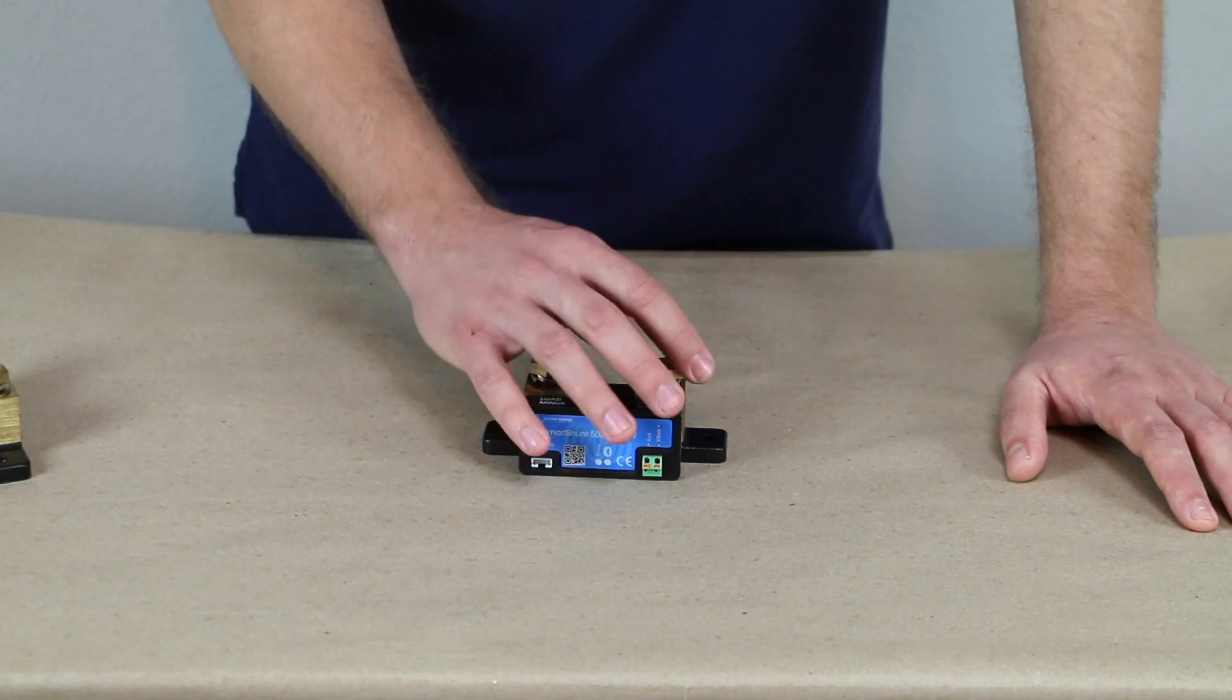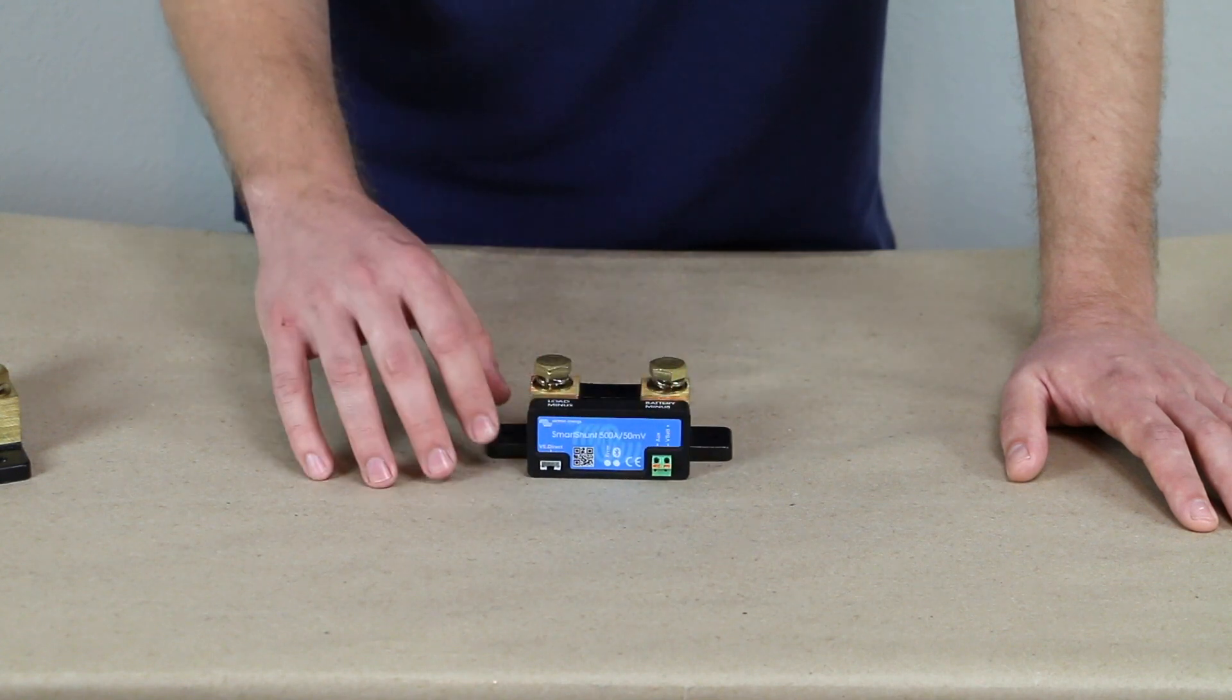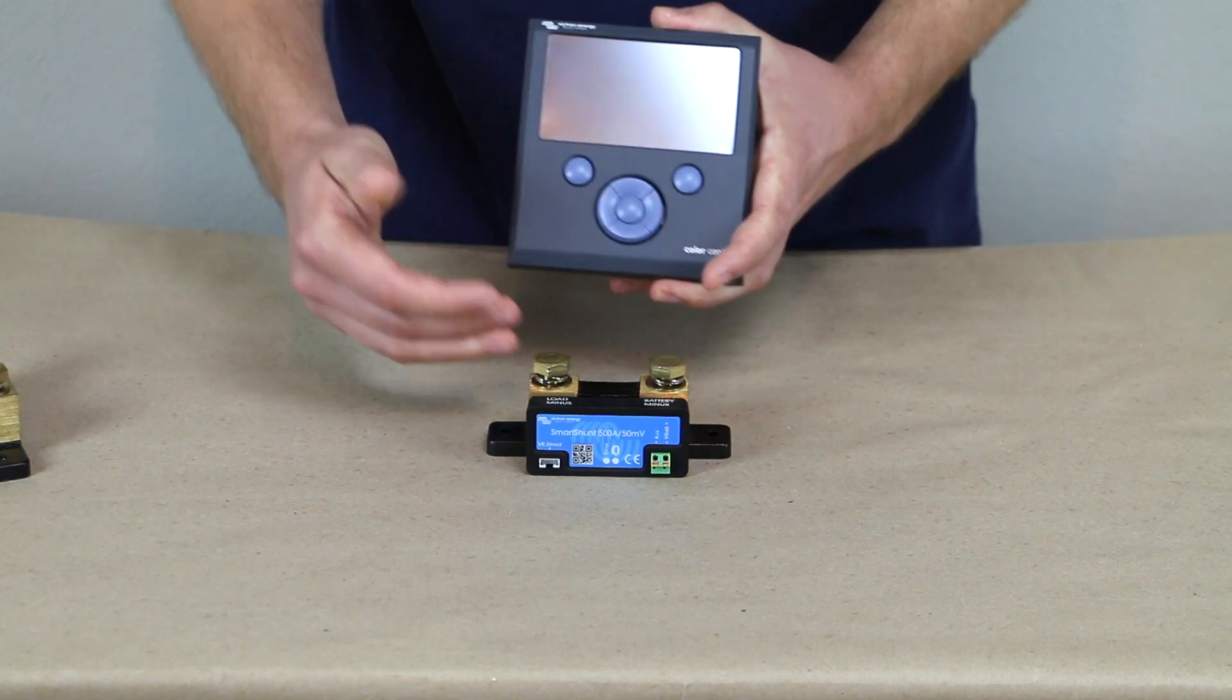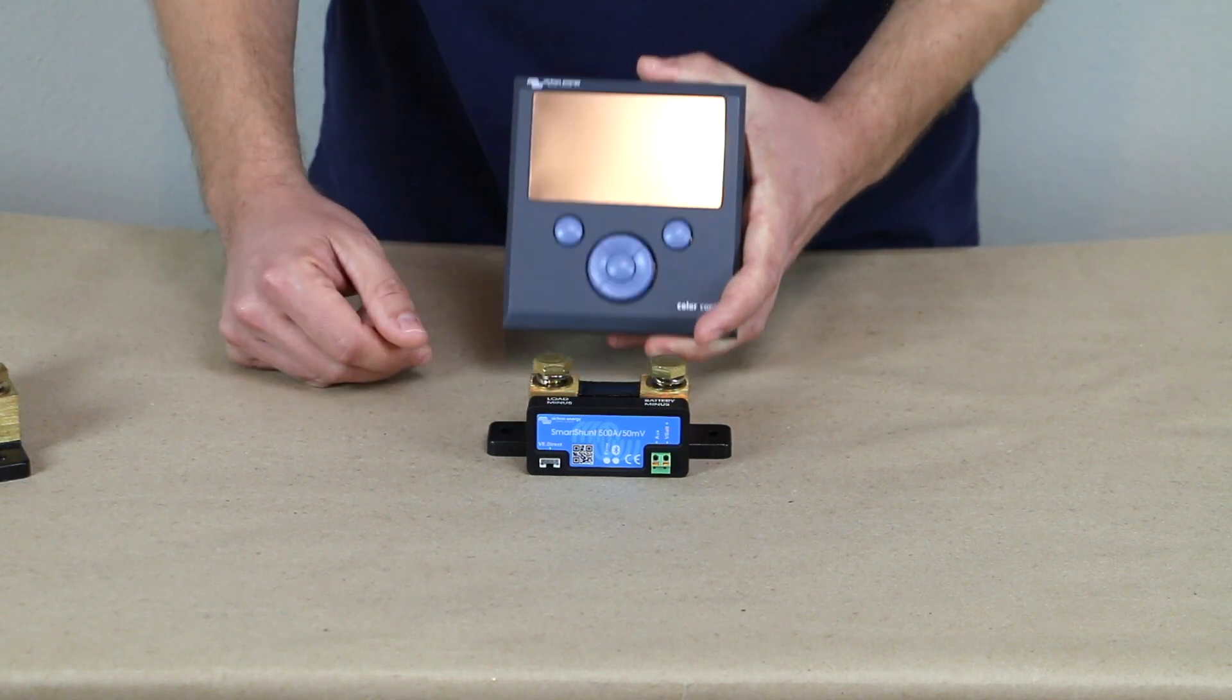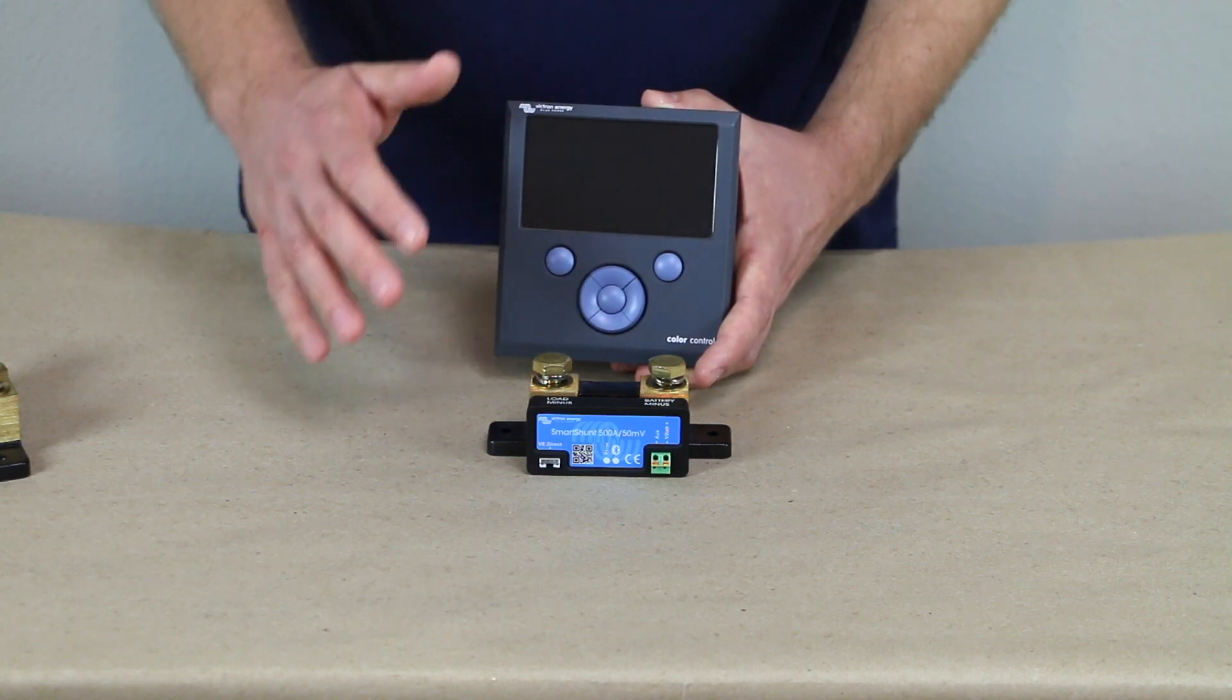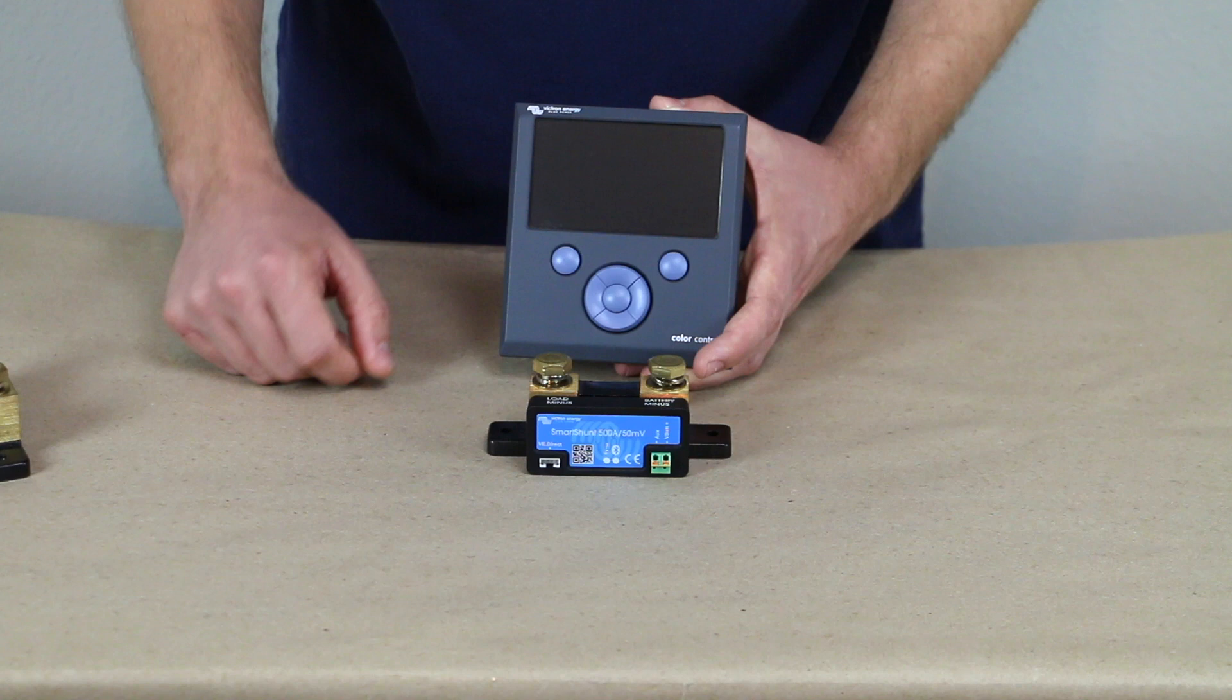So there are several reasons why you might want to get the smart shunt. And again, it's $75 less because it doesn't have that screen. And it's all you need if you're going to network that battery monitor to a GX device. So hope that all made sense. At this point, let's wire one of these into a power system and we'll take a reading.